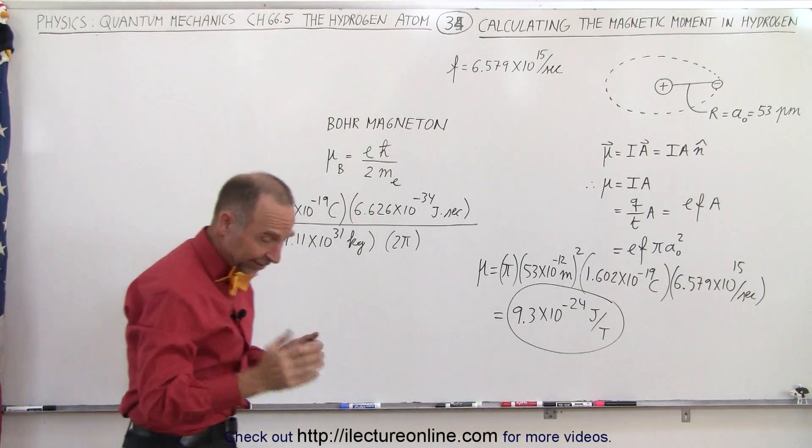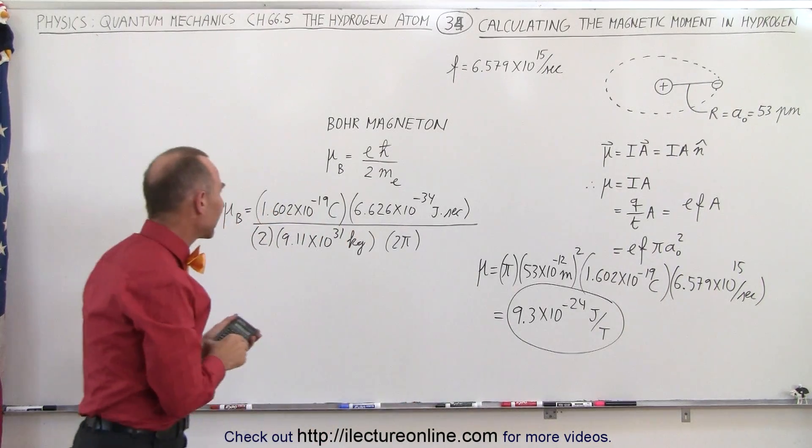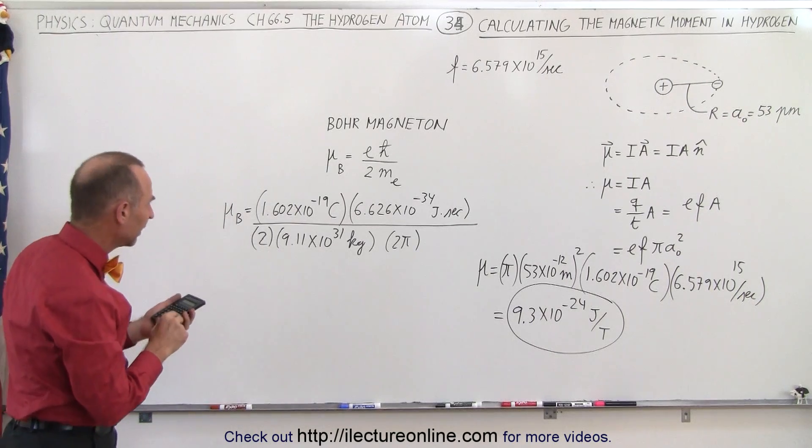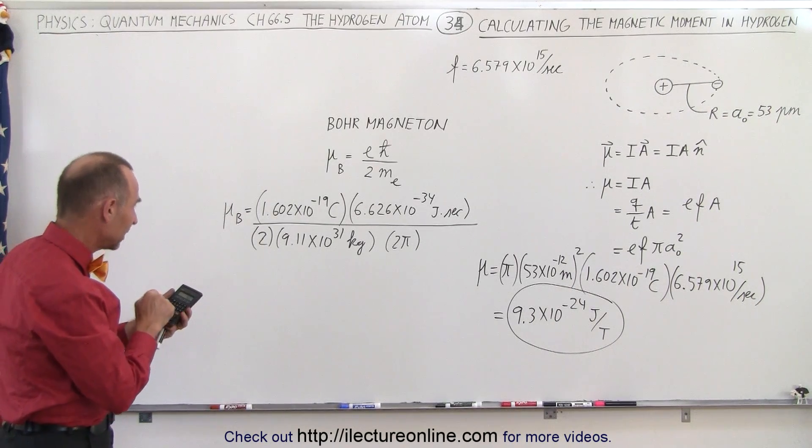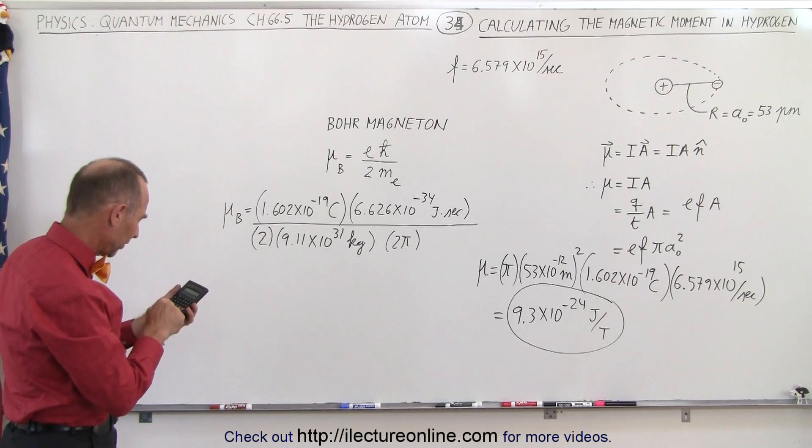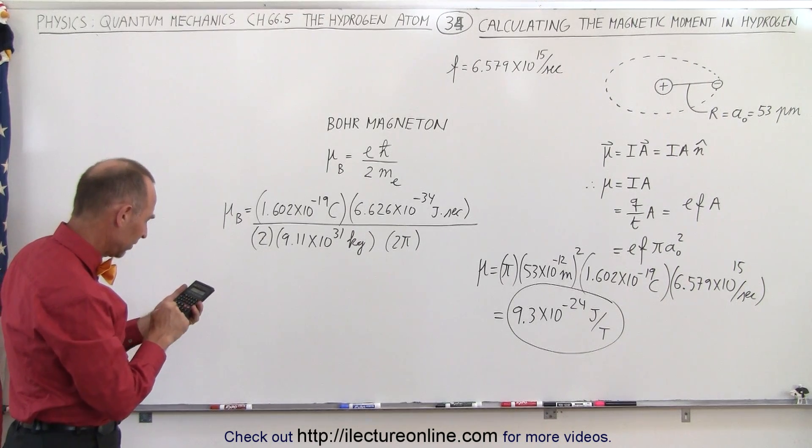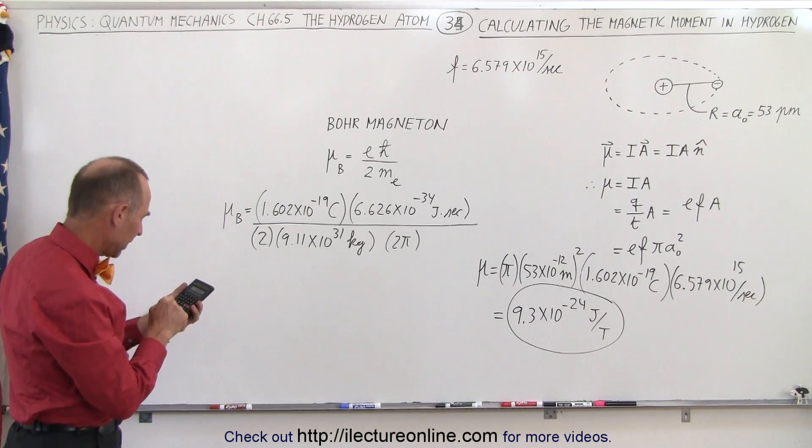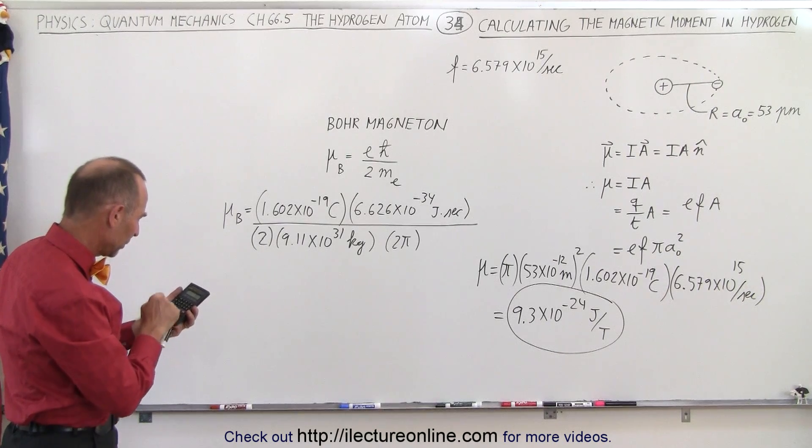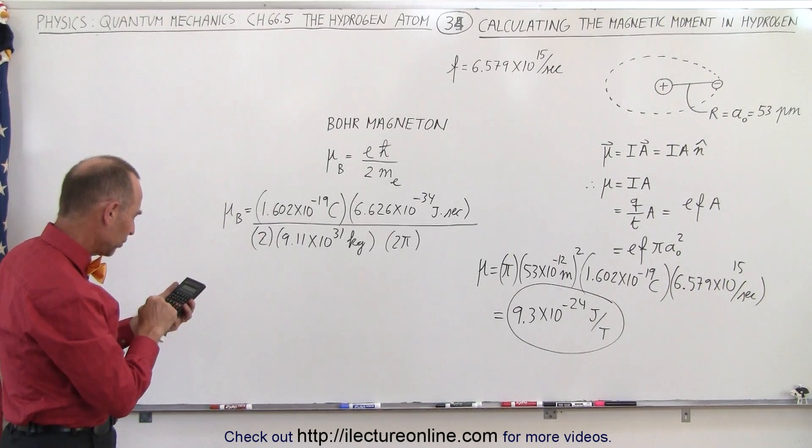And since, let's see what we get when we use a quantum mechanic term, so the Bohr magneton. So we get 1.602e to the 19 minus times 6.626e to the 34 minus. Divide by 2, divide by 9.11e to the 31 minus. Divide by 2, divide by pi equals.